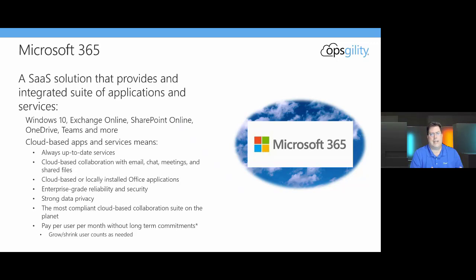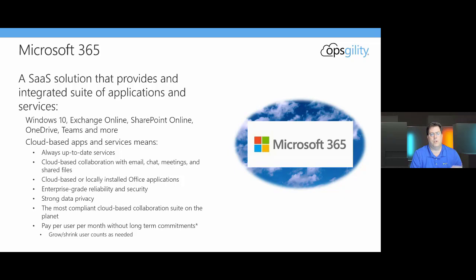What a software as a service platform provides is cloud-based applications and services that are always up to date. They provide cloud-based collaboration and integration between email, chat, meetings, and shared files. One of the key differentiators of Microsoft 365 from other cloud-based SaaS productivity services is you can work within these applications from a cloud-based browser or install them locally on your Windows or Mac devices. The suite is built with strong data privacy capabilities and is the most compliant collaboration suite available. You can pay per user per month without any long-term commitments.